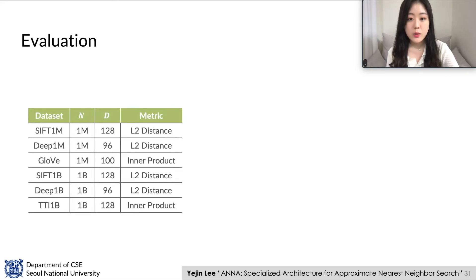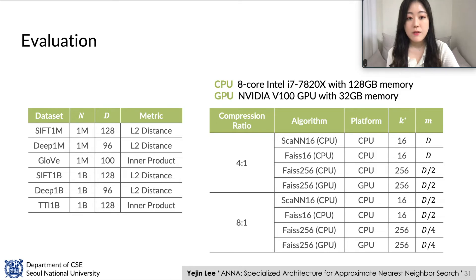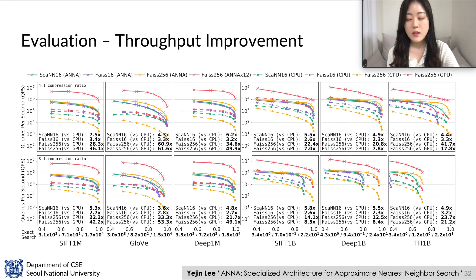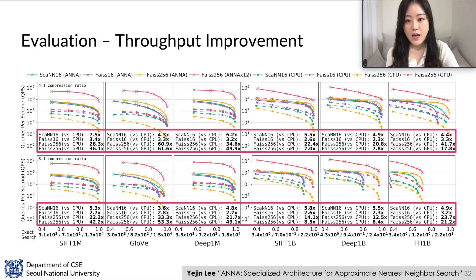We evaluate on 6 representative similarity search datasets including both million and billion scale. We choose two representative PQ-based methods, FAISS from Meta and SCAN from Google, and two evaluation platforms: an 8-core Intel server and an NVIDIA V100 GPU. The throughput comparison graph shows queries processed per second on a log scale versus recall. Upper graphs show results for 4-to-1 compression ratio and lower graphs for 8-to-1 compression ratio. ANA achieves substantial speedup over CPU and GPU implementations across varying recalls.